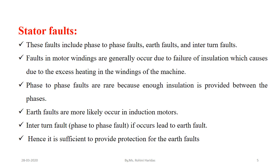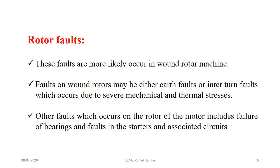Phase-to-phase faults are rare because enough insulation is provided between phases. Earth faults are more likely to occur in the induction motor. Interturn faults, if they occur, lead to earth faults; hence it is sufficient to provide protection against earth faults. An interturn fault means a fault occurring between two or more turns within a single phase winding. Rotor faults are more likely to occur in wound rotor machines, caused by severe mechanical and thermal stresses, and may include bearing failures.